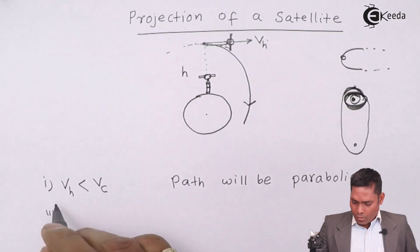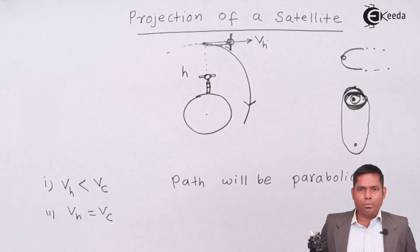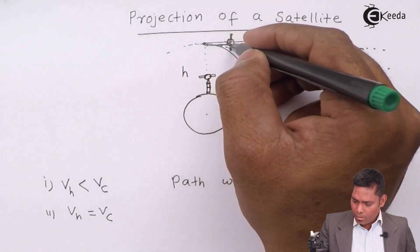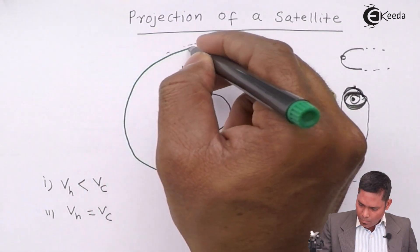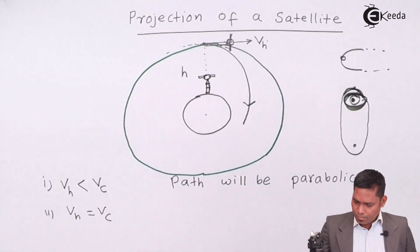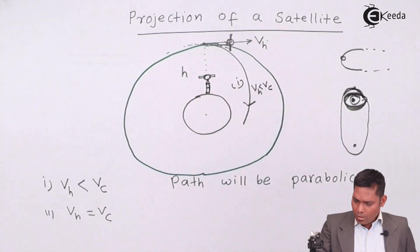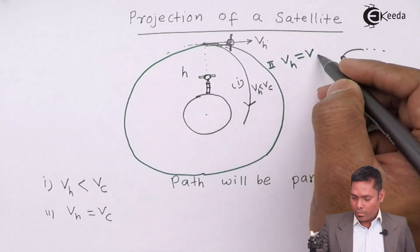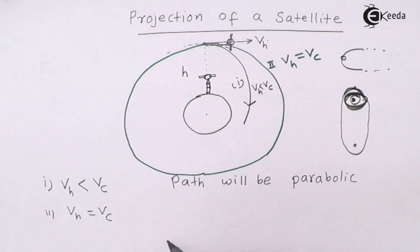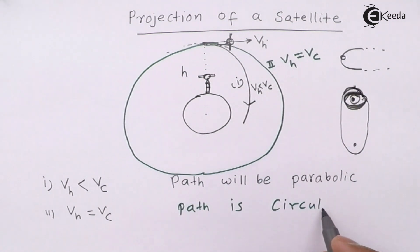If the horizontal velocity of projection is equal to the critical velocity required for circular motion, the path will be circular — the satellite will complete a full circle around Earth. In this case, rotation around Earth is possible.